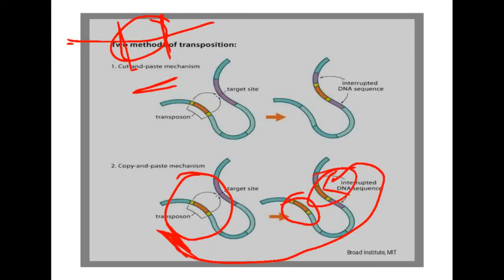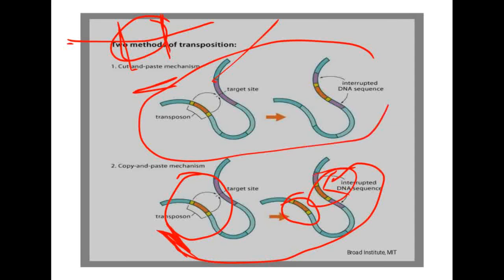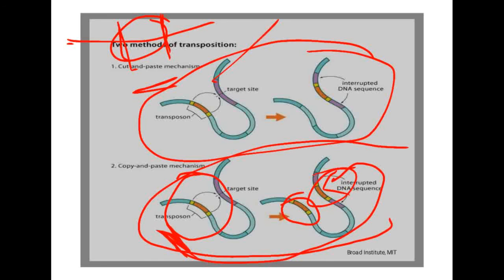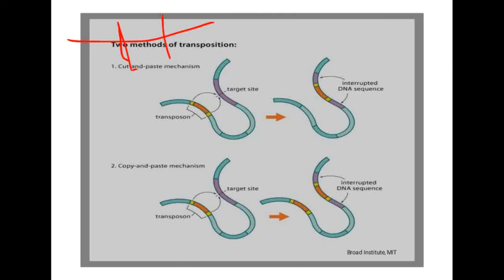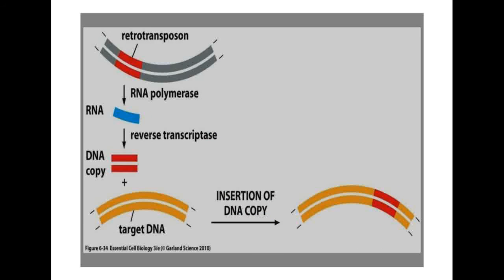The cut-paste mechanism is otherwise called the conservative type of transposition, and the copy-paste mechanism is otherwise called the non-conservative or replicative type of transposition. So DNA transposition is of two types: conservative (cut-paste) and replicative (copy-paste).